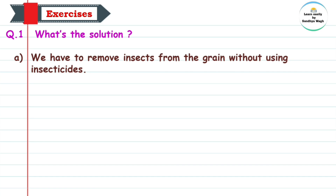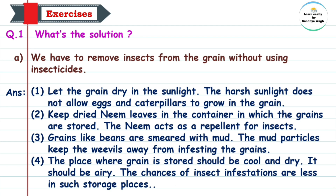We have to remove insects — 'insects' means 'kide' — from the grain without using insecticides — 'insecticides' means 'kitnashak'. Answer: Let the grain dry in the sunlight. The harsh sunlight does not allow eggs and caterpillars to grow in the grain.